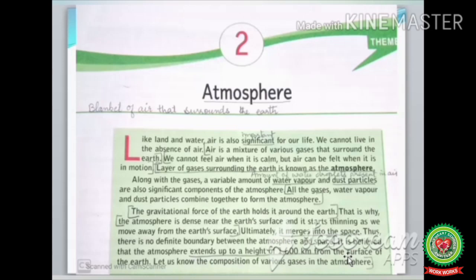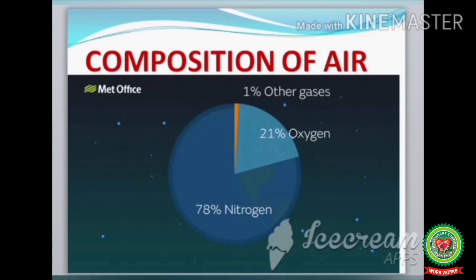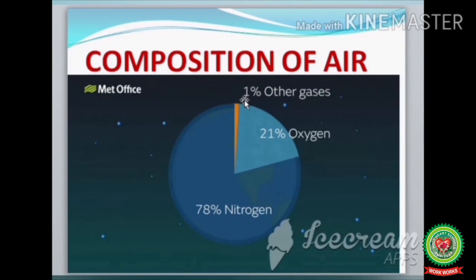Let us know the composition of various gases in the atmosphere. Air is a mixture of various gases in different proportions. First is Nitrogen with 78%, which comprises a large part of the atmosphere. Next is Oxygen with 21%, which is a life-supporting gas. The remaining 1% are other gases including Helium, Argon, Hydrogen, Carbon Dioxide, dust particles, and water vapor.